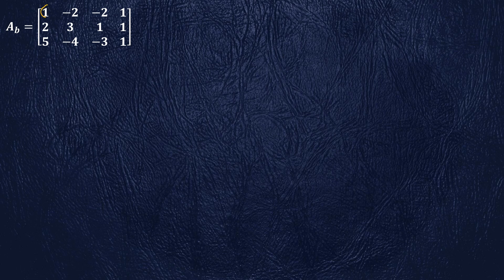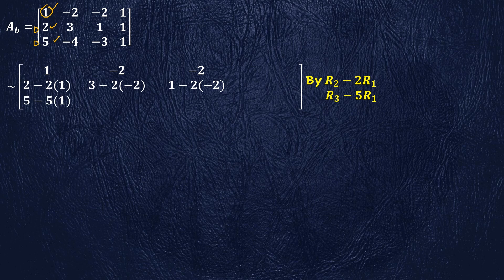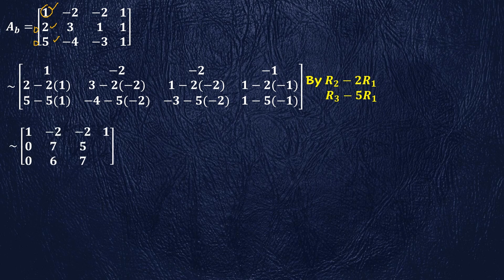We reduce the augmented matrix into echelon form using row operations. The first non-zero element in the first row is 1. We make elements below it zero: for this we multiply row 1 by 2 and subtract it from row 2, and multiply row 1 by 5 and subtract it from row 3. After applying these row operations we are left with this transformed augmented matrix.